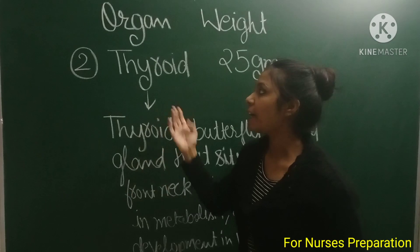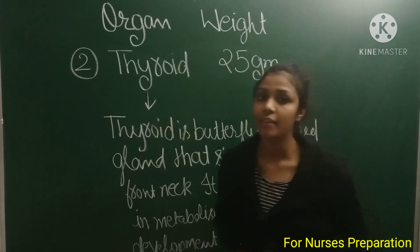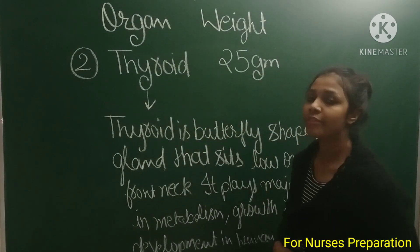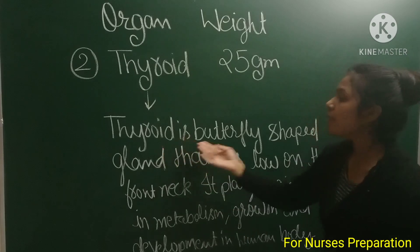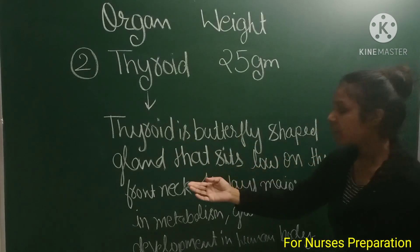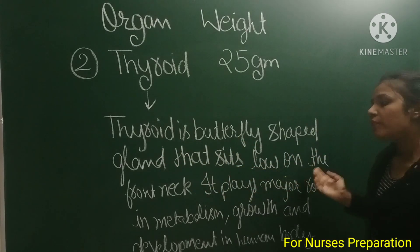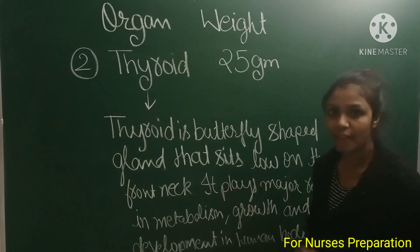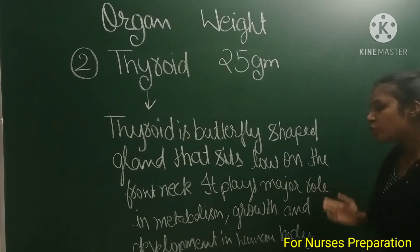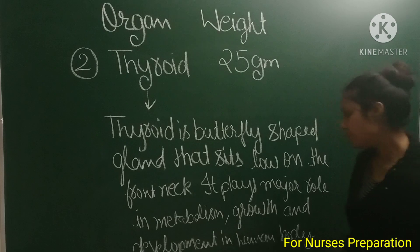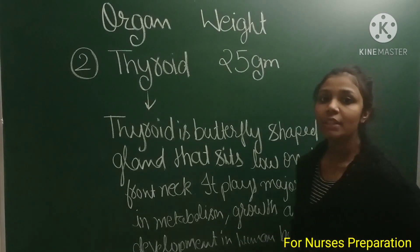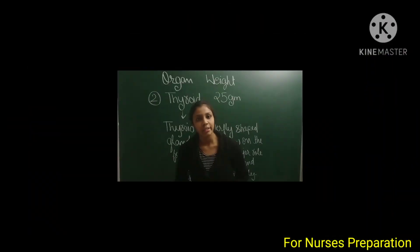Next is the thyroid gland. The thyroid weighs 25 grams. It is a butterfly-shaped gland that sits low on the front of the neck. It plays a major role in metabolism, growth, and development in the human body.